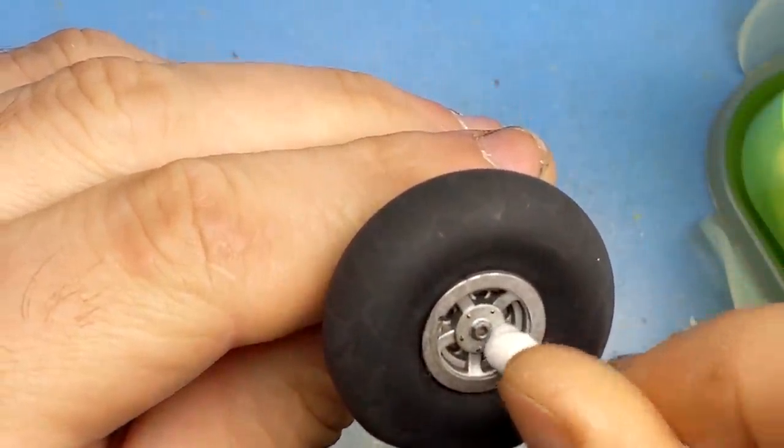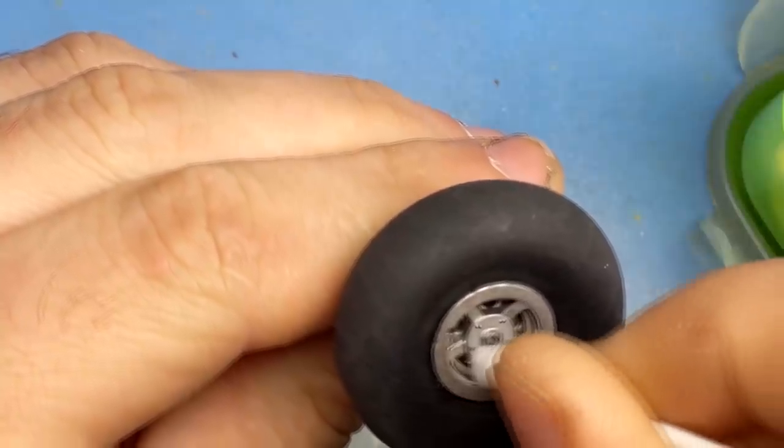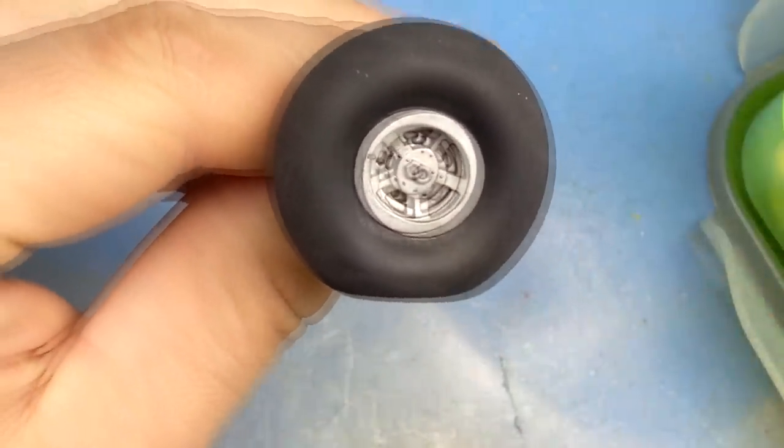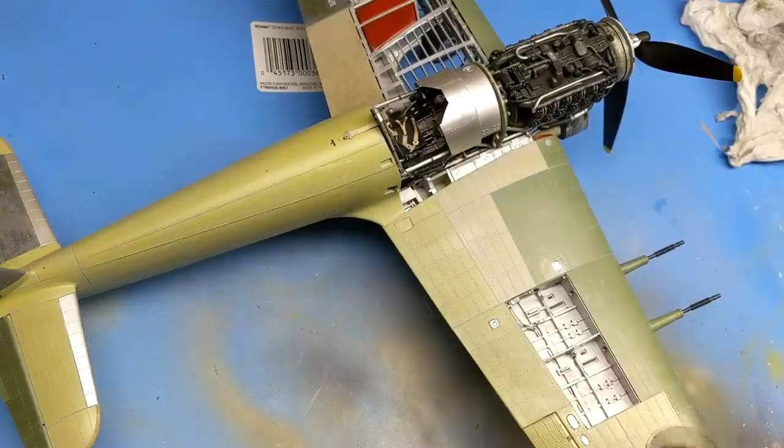Now that all the weathering on the aircraft is complete, it's time to come in with a matte coat to seal everything in and to get rid of that shine. I do this in just a few thin layers to get rid of the shine rather than one thick one.